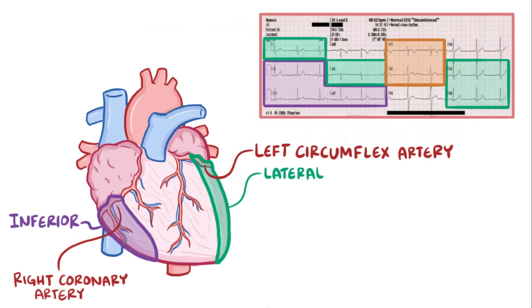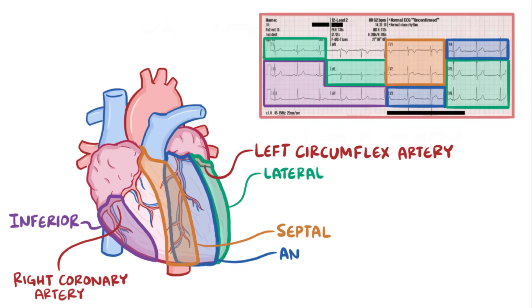Finally, V1 and V2 are considered septal leads because they're nearest to the interventricular septum, and V3 and V4 are anterior leads because they're nearest the anterior wall of the heart. Both of the septal and anterior regions are served by the left anterior descending artery.